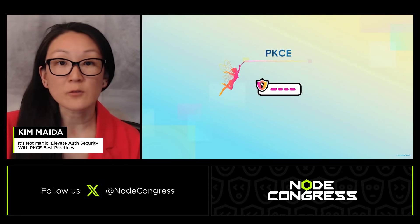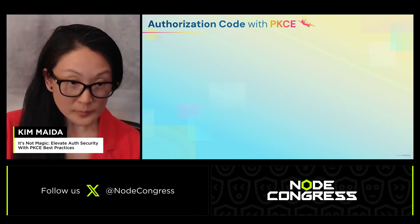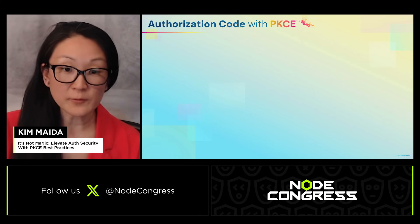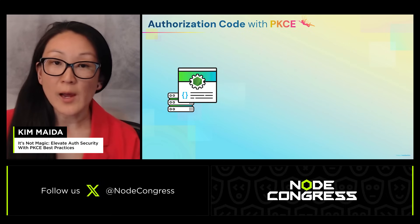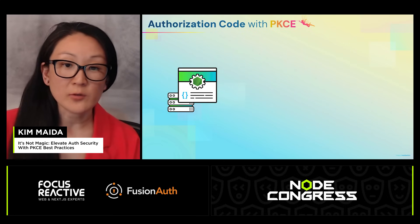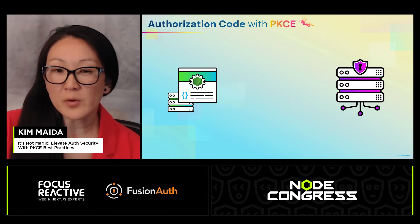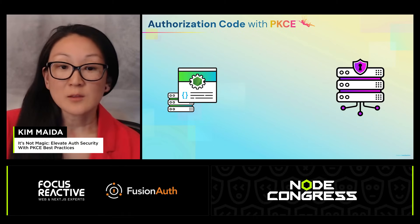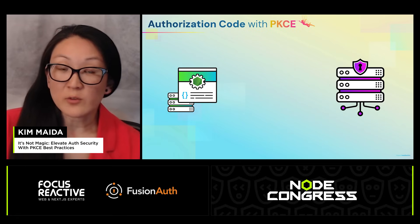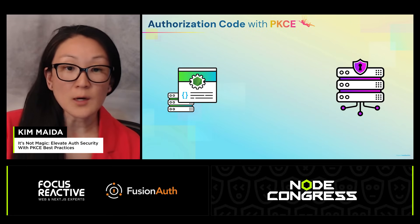PKCE is an added layer of security over the authorization code flow. This flow works like this: let's say you have your Node app living on your server, and then you have an authorization server — which is really just a fancy word for a set of endpoints for issuing tokens. The authorization server might be hosted locally on your own infrastructure or in the cloud.